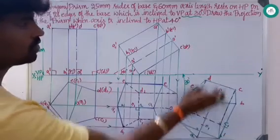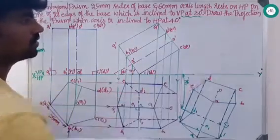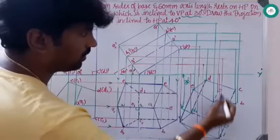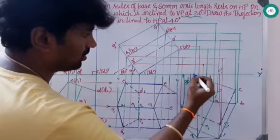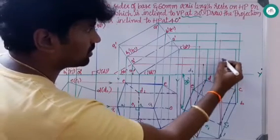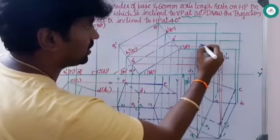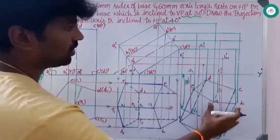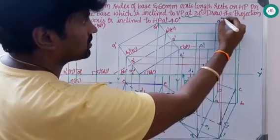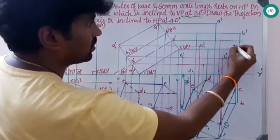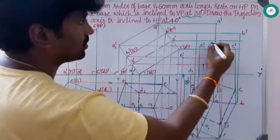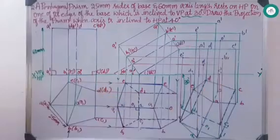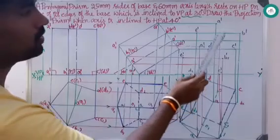Next, from all these points project up and again from these points project to the right side. After projecting, slowly meet the points. We know that the resting edge falls on the XY line — have a look, this is your c1 dash and this is your d1 dash. Now meet the other points: this is your b dash, b1 dash, and this is your a1 dash and e1 dash. We have met all the points in the base. Now have a look at the top face — this is a dash, this is b dash, this is c dash, this is d dash, this is e dash, and this is o1 dash and o dash.